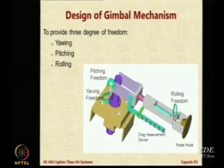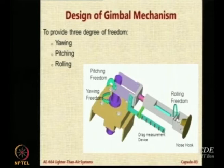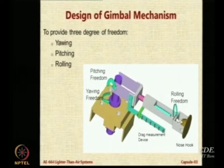Based on these requirements the mast was designed. Here is a pictorial indication of the kinds of freedoms expected on the airship. This is a closer view of the gimbal mechanism designed by a student named Sagar Kale in the year 2005. He designed a system on the top of the mast with a facility for yawing freedom, where a nose hook attaches to the airship nose and a spring-mounted system is pulled as the drag force acts on the airship, providing yawing and pitching freedom.